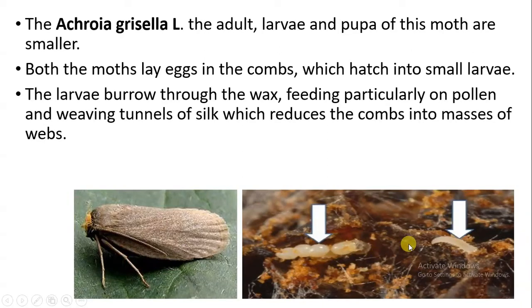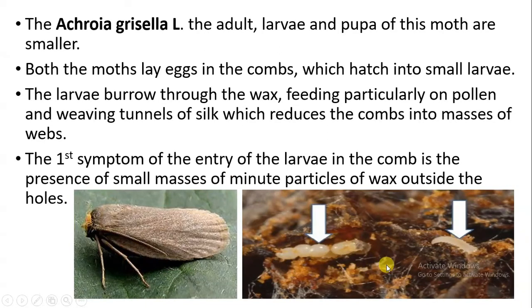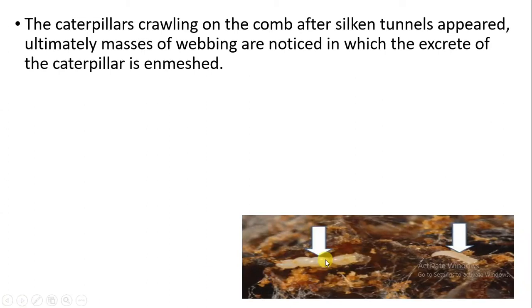The comb size is reduced because of the silk, and masses of webbing occur on the comb. The very first symptom of larval entry into the comb is the presence of masses of minute particles of wax outside the hive entrance. When we inspect the combs, there will be presence of wax particles outside the hole and masses of minute wax particles are present.